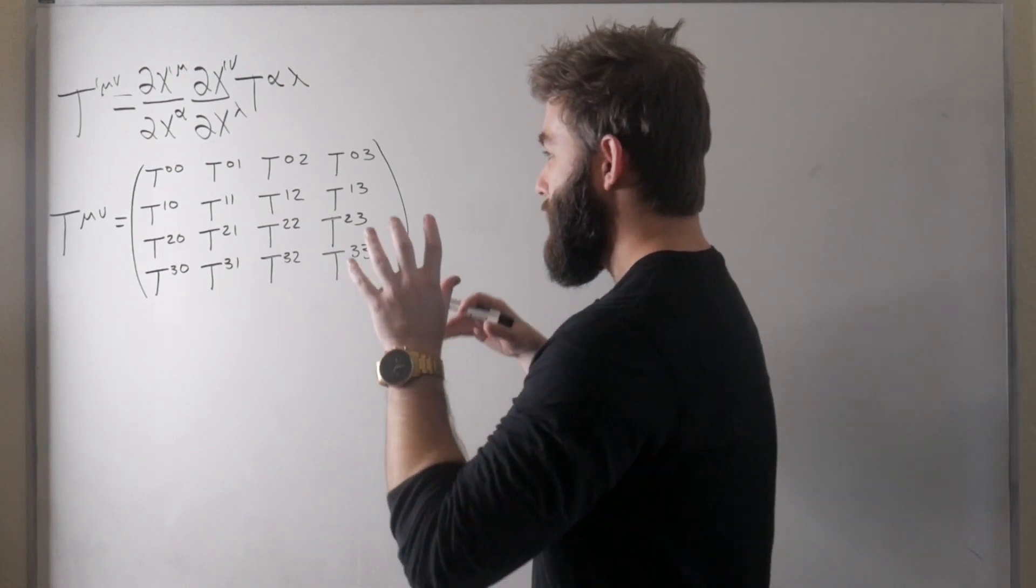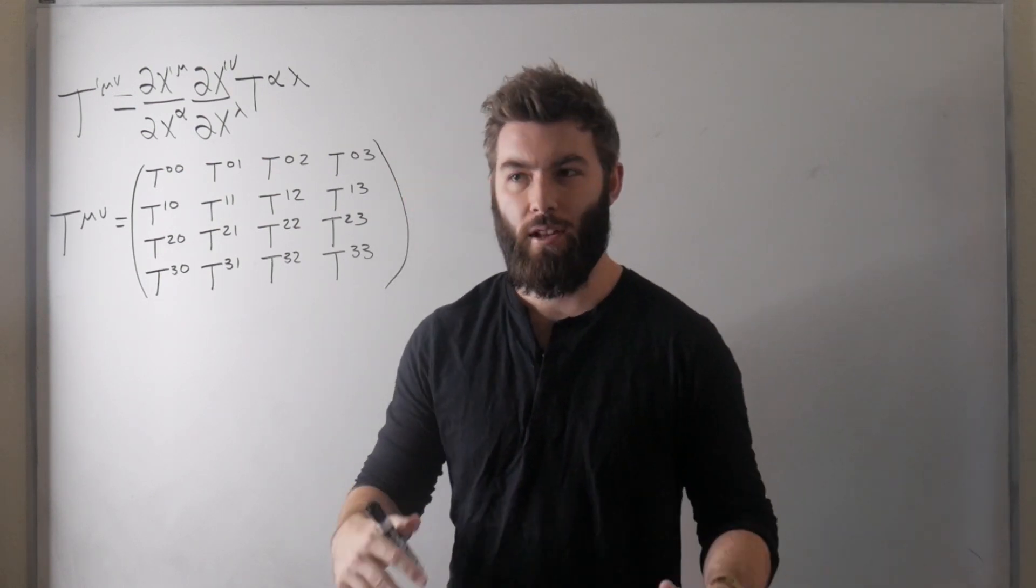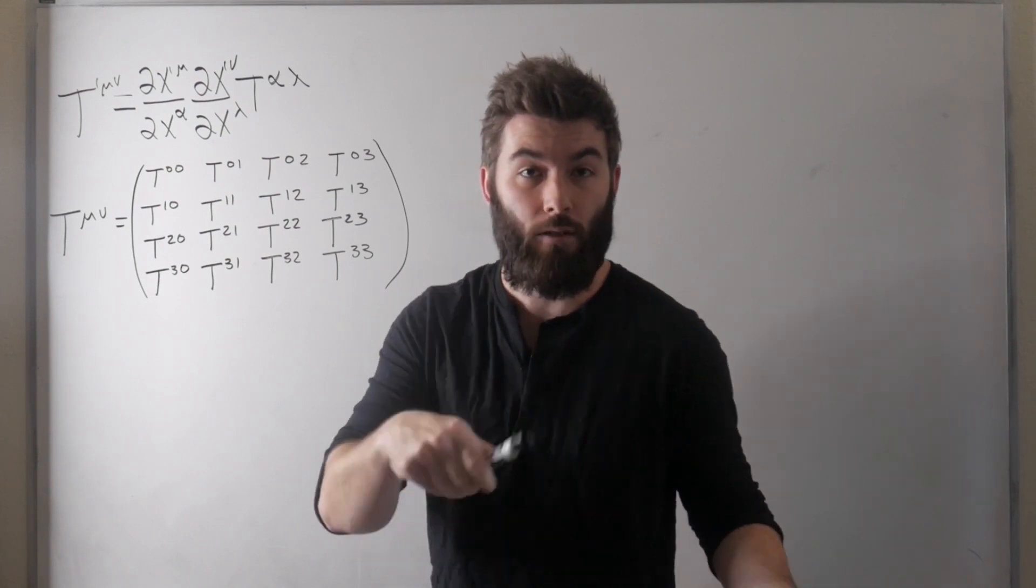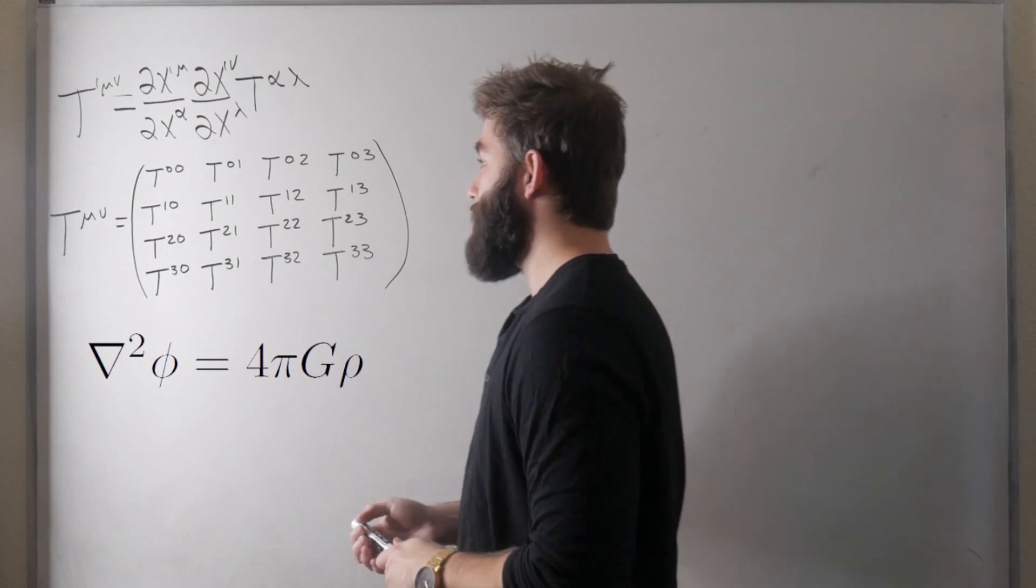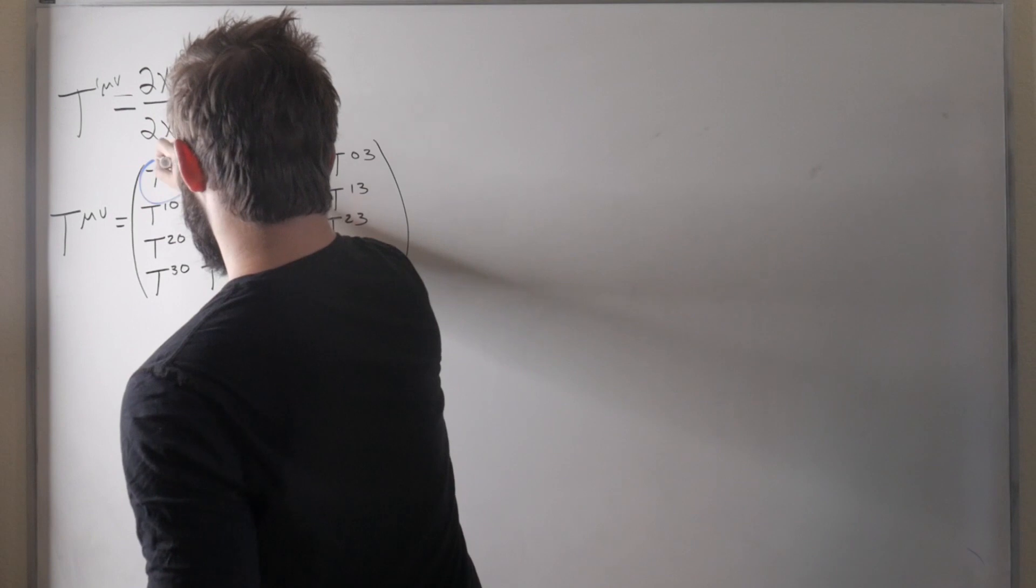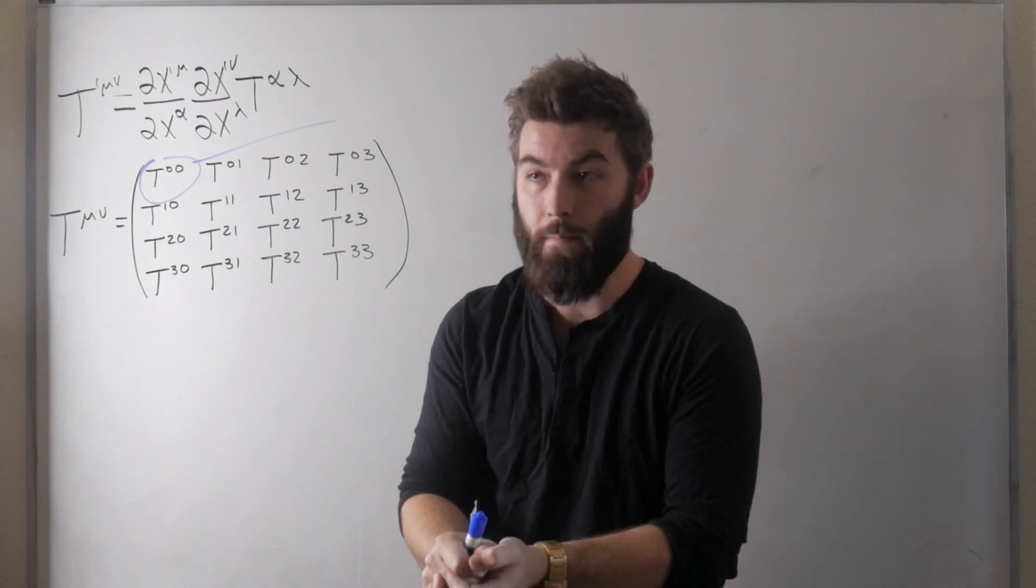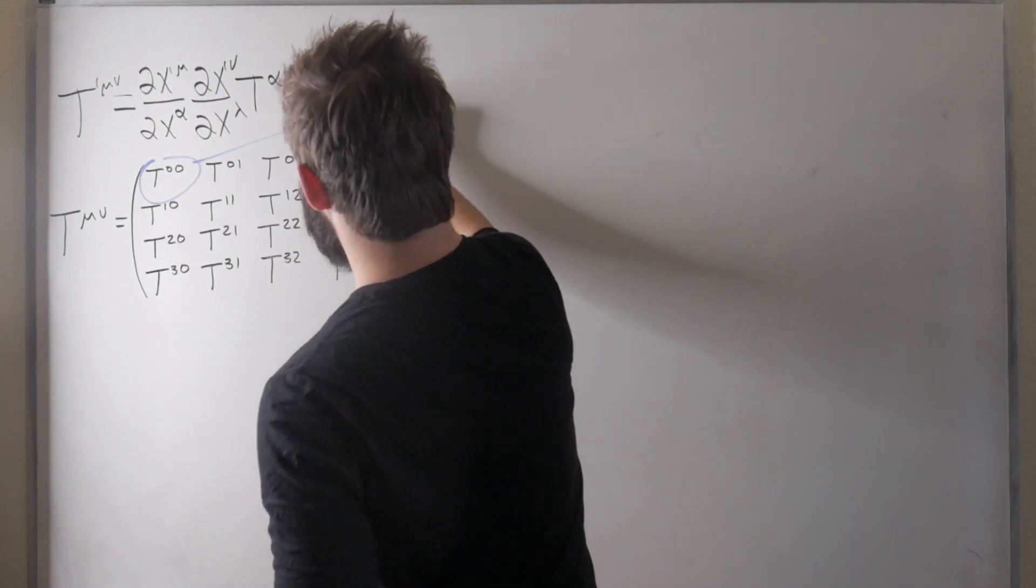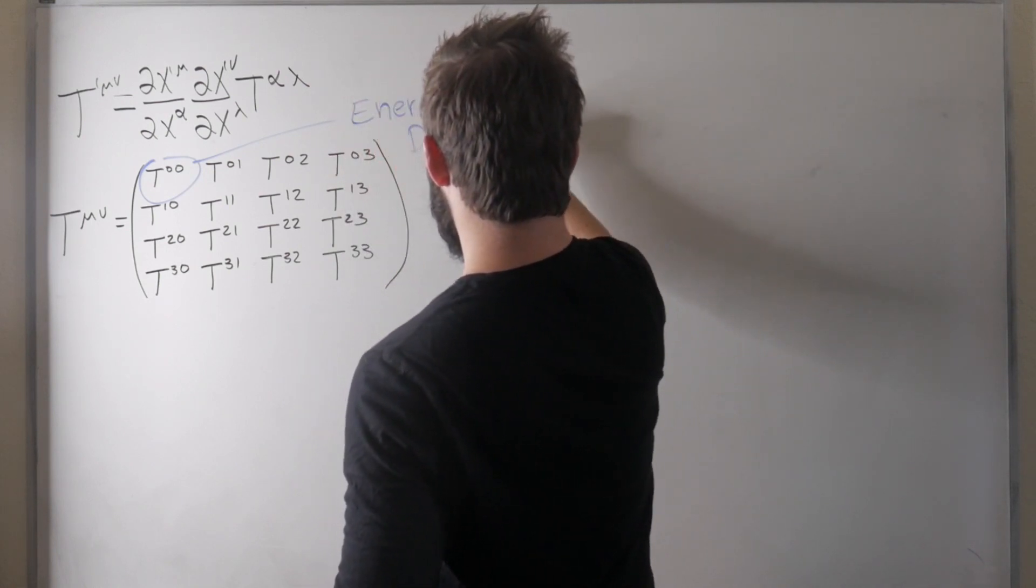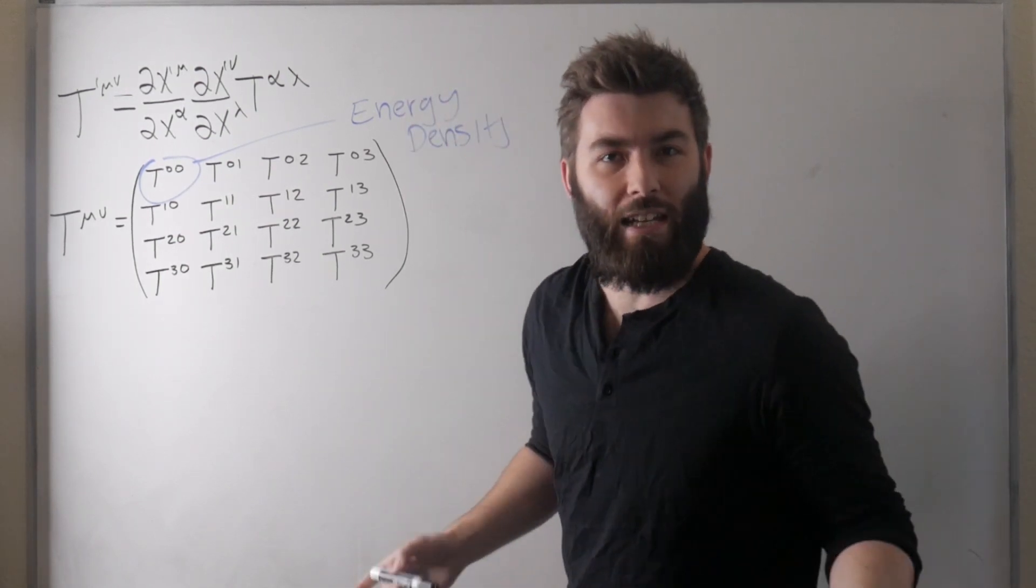So really the energy momentum tensor at least in the context of general relativity is kind of like a generalization of the matter density that you use in say newtonian physics, that rho on the side of Poisson's equation. So with that it kind of follows that this term here T^00 at least if we're looking at say some fluid some infinitesimal patch of a fluid in its rest frame this is going to represent its energy density. Okay energy density and once we want totals we can just integrate over all space.